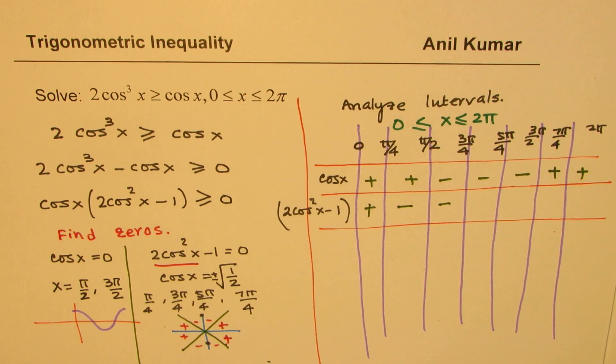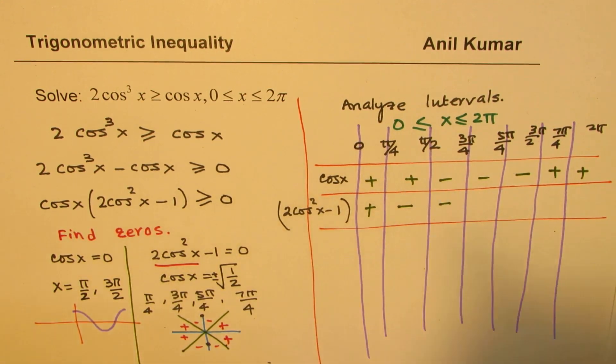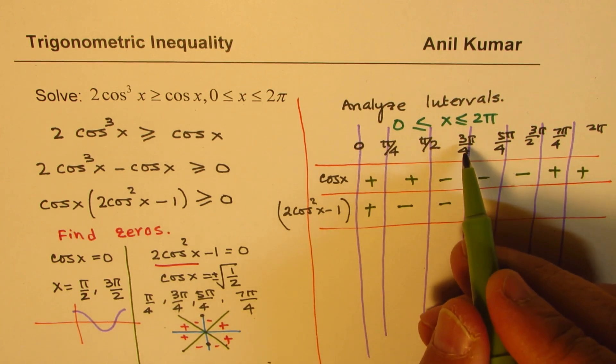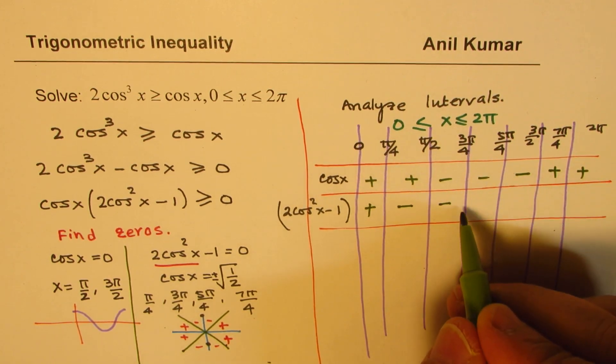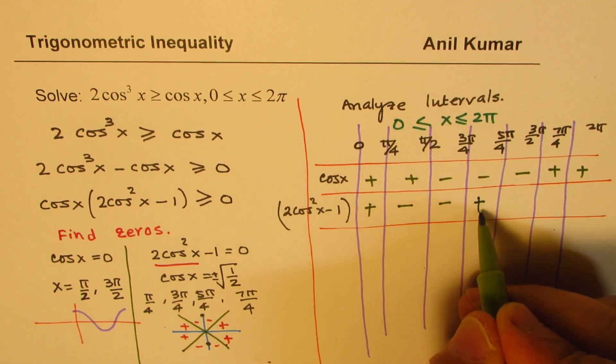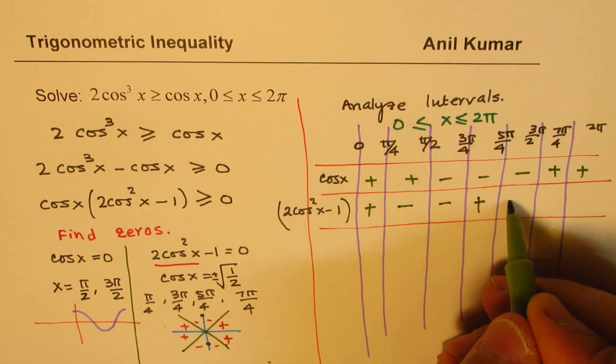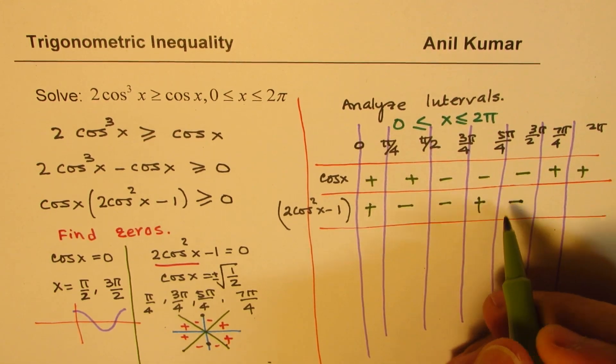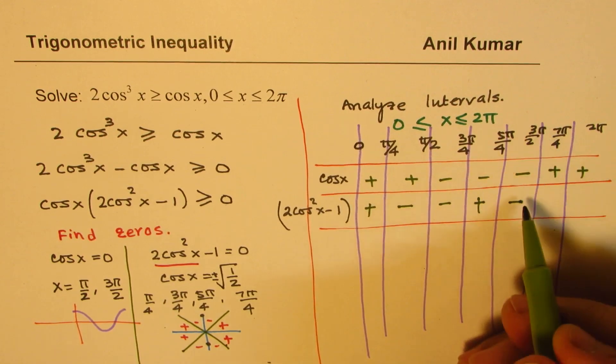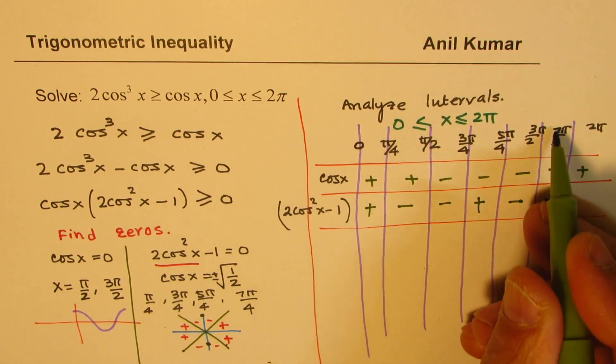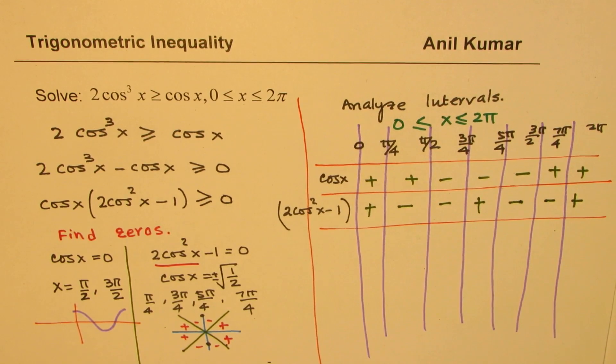So that is how we could visualize it. And now we'll write it here. So after 3π/4, it again changes sign. 5π/4, it changes sign. And then 3π/2, it remains same. But after 7π/4, it changes sign. So that becomes the sign for the second factor.